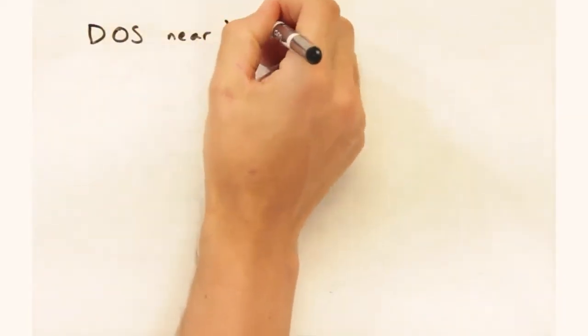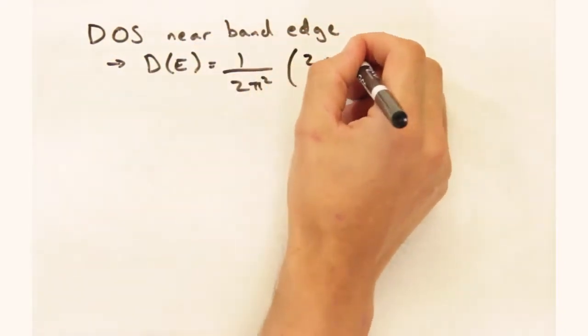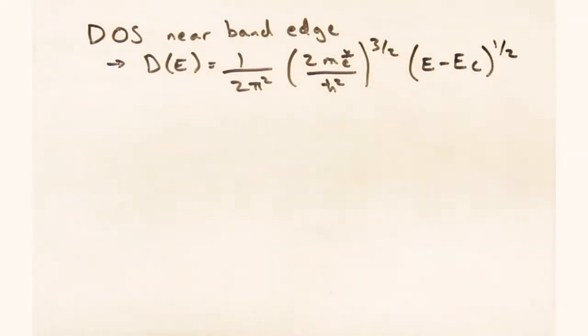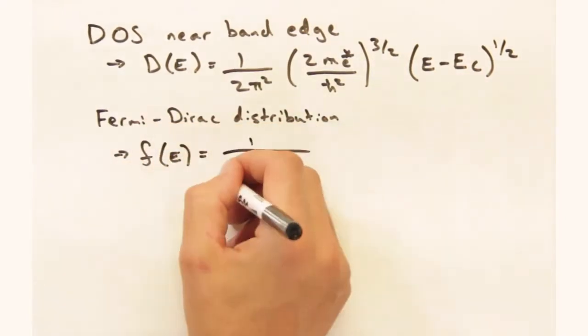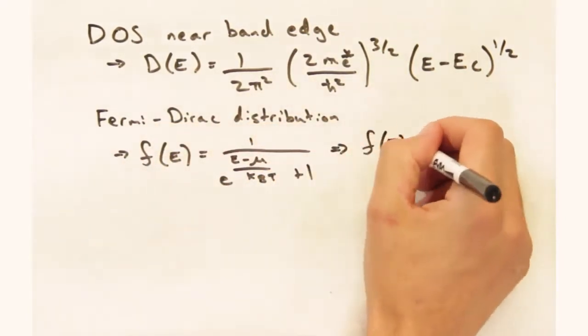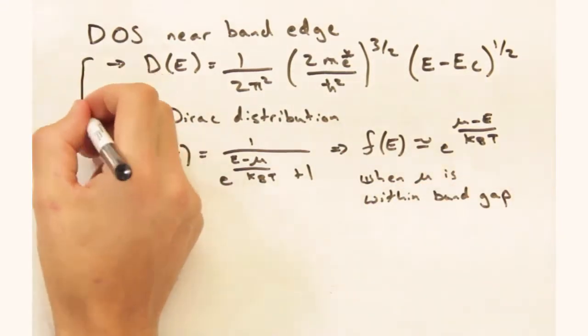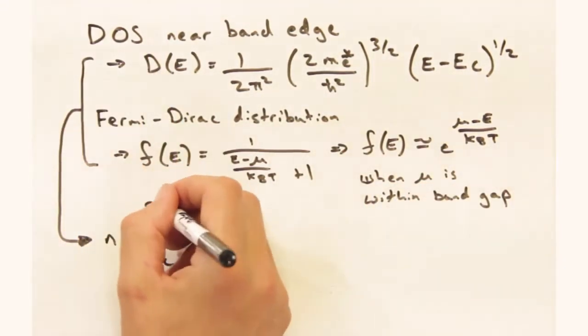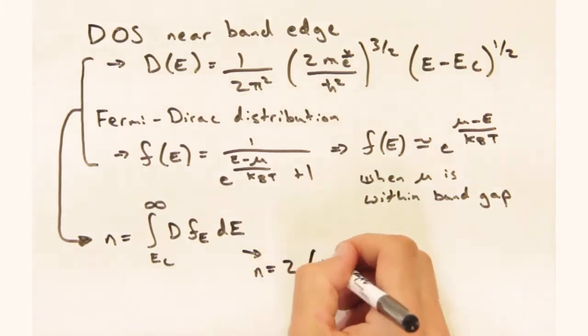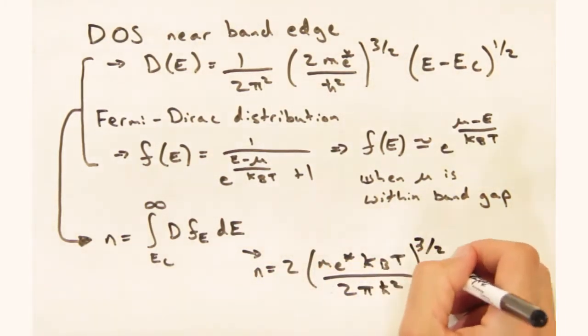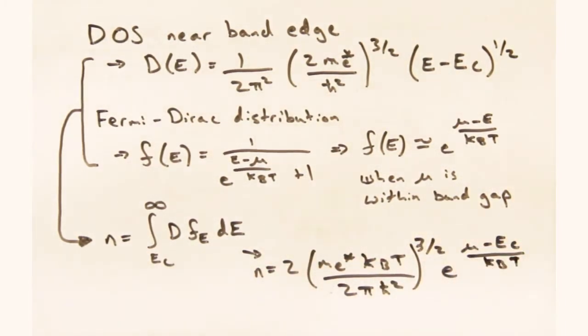For the density of states expression, it will be similar in form to the one from the free electron model, except the energy is offset by the energy of the conduction band, and we have a correction for the band mass. And the Fermi Dirac distribution would be the same, right? Actually, we can simplify it a tiny bit by assuming the Fermi level is somewhere within the gap, and the system is at relatively low temperature. Plugging all this into Mathematica, we get n. Awesome!